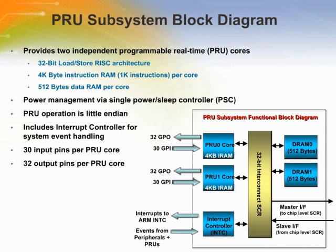The PRUSS consists of the following blocks: two independent 32-bit RISC processors, each with 4K of instruction RAM and 512 bytes of data RAM, an interrupt controller for system event handling, and an IO interface with up to 30 input pins and 32 output pins per PRU core on the AM18X. The AM17X PRU does not support IO pins but can still be used for custom data movement schemes, custom timers, etc. Note that although the PRU can only run from its dedicated instruction RAM, it can be reset and new code can be loaded, allowing use of the PRU for multiple functions.